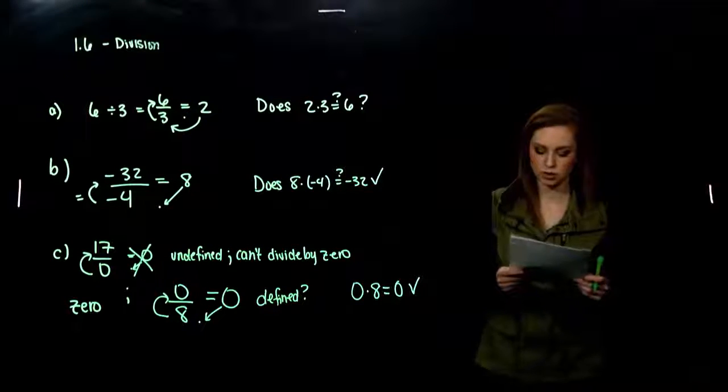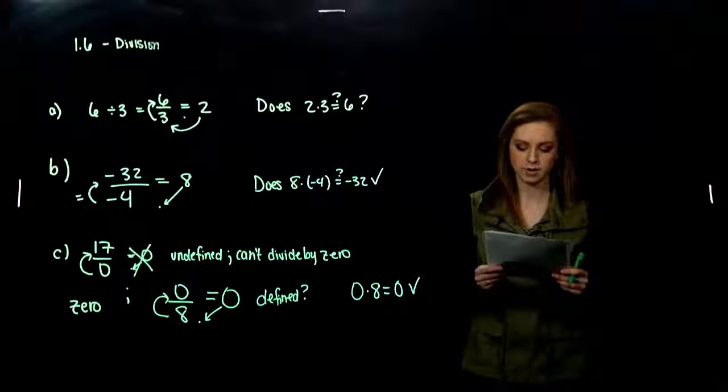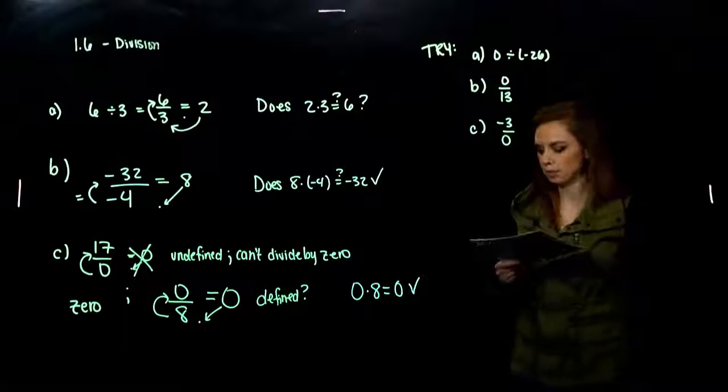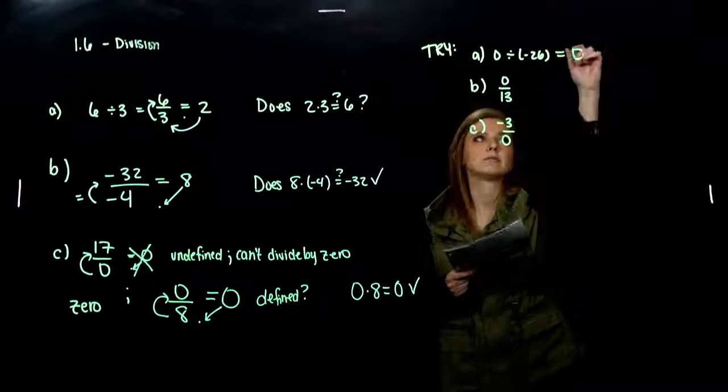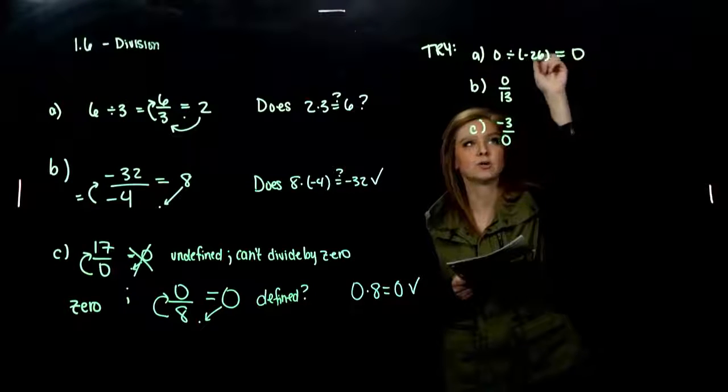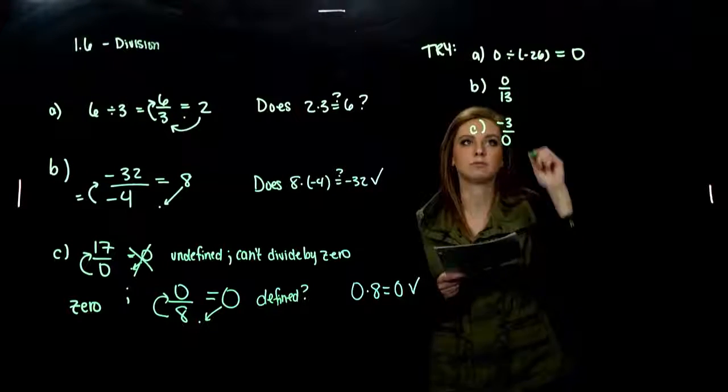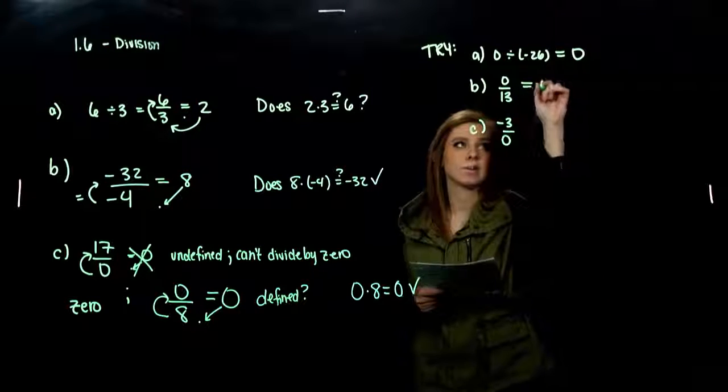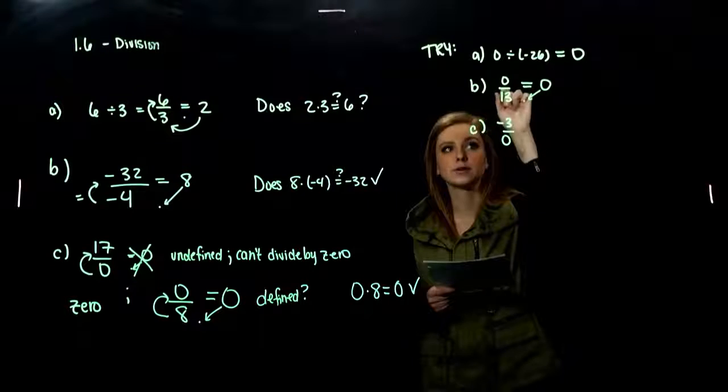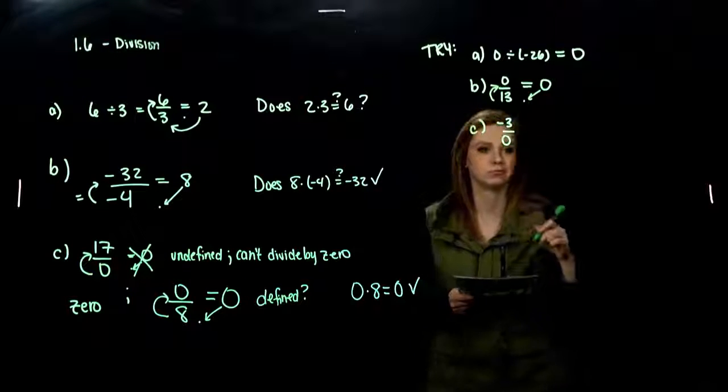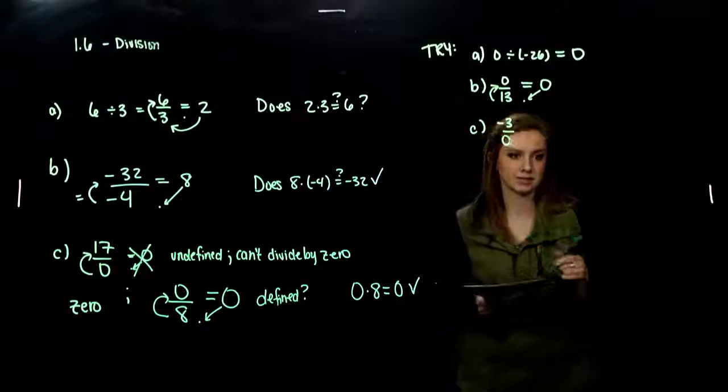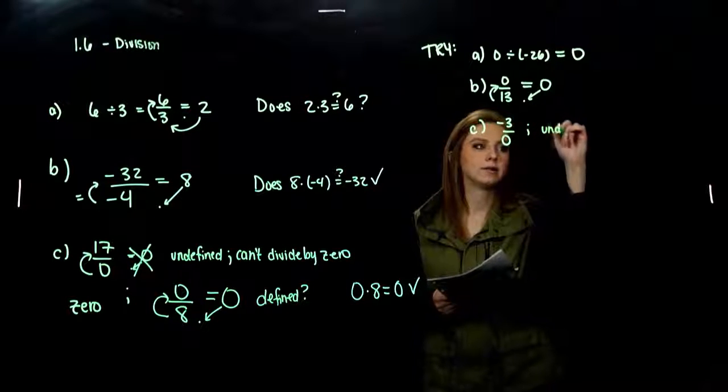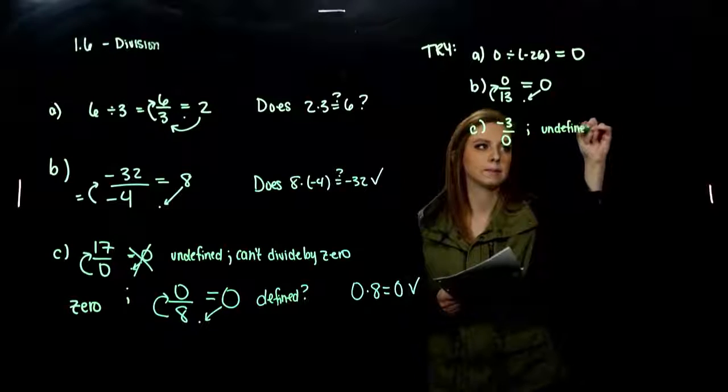Take those few tries, divide if possible. If not, tell me why not. Alright, what did you get for that first one? 0 divided by negative 26 is always going to be 0, because we can ask: is 0 times negative 26, 0? Mm-hmm. What about part B? Again, 0 divided by anything is 0, because we can ask: 0 times 13, is that equal to 0? Mm-hmm. And then what about C? Is that one defined? No, we can never divide by 0. Undefined. Good.